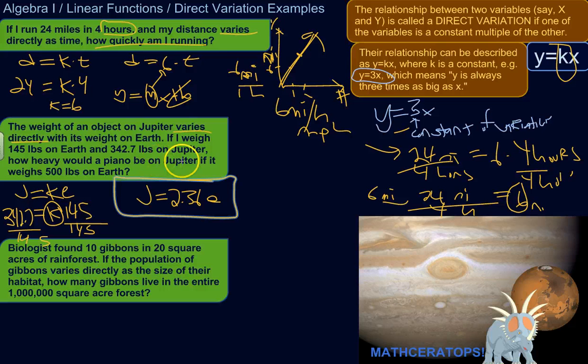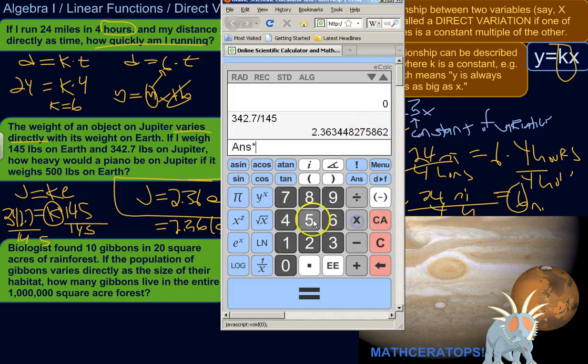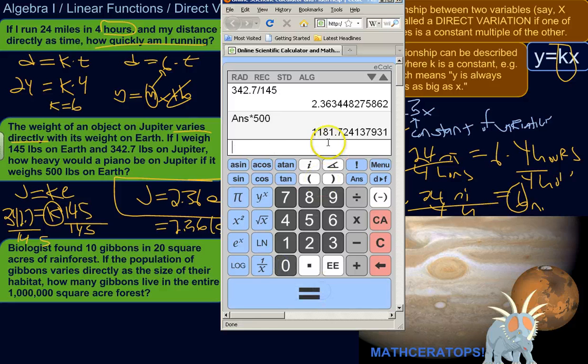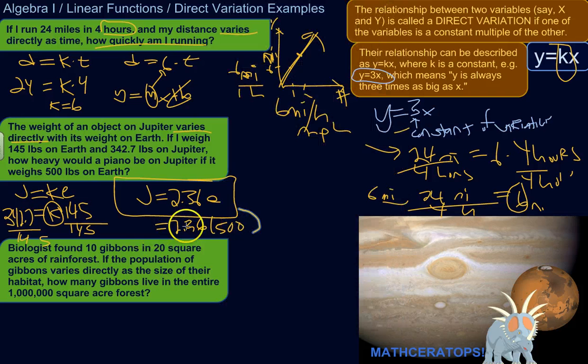Okay, so how heavy would a piano be on Jupiter if it weighs 500 pounds on Earth? Okay, so we would just plug that in here. All right, its earthly weight would be 500 pounds. So we do that number times 500. Boom. 1,181 points and stuff pounds on Jupiter. So very heavy piano.